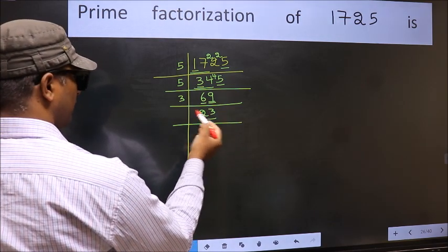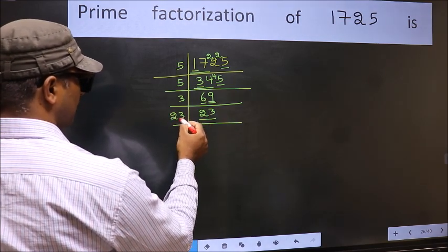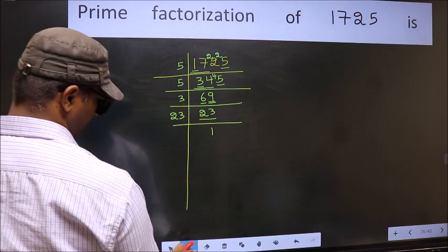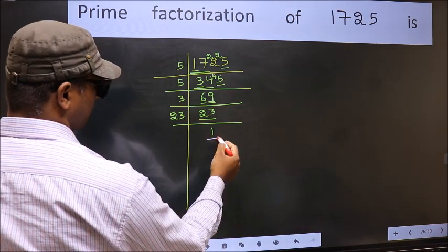Now here we have 23, 23 is a prime number, so 23, 1 is 23. So we got 1 here.